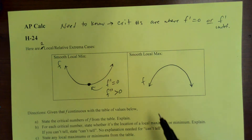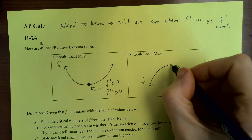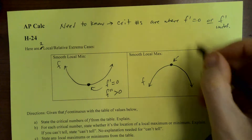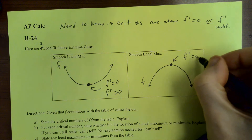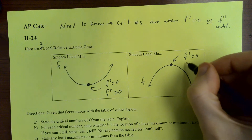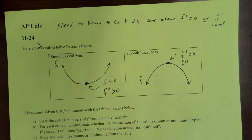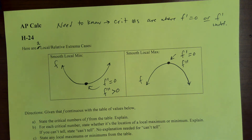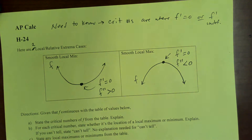Here's another case with F. This time it has a smooth local max right up there. At that point, F prime is the slope of the tangent line — F prime is zero. What about F double prime? For F double prime, you think of concavity or inflection points. Is F concave up or down here? It's concave down. So F double prime is less than zero.